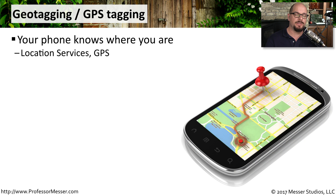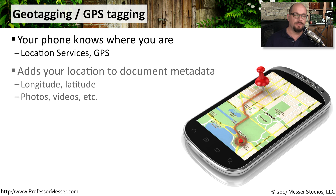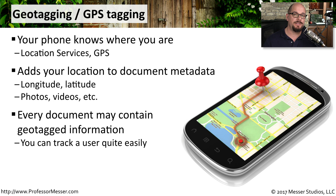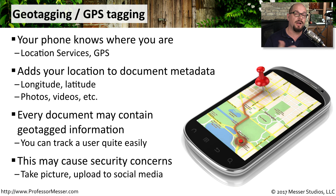The GPS functionality of our phones lets us track where the phone is, useful for getting directions. But this location information could get into the hands of others. For example, when you take a picture or video, GPS coordinates can be attached to the metadata of that media. As you take more pictures and store more documents, more geotagged information accumulates on your device, making you easier to track. This is a significant security concern, especially if you're uploading pictures to social media without removing those metadata details before posting publicly.